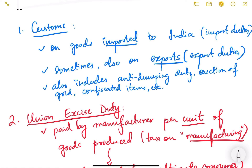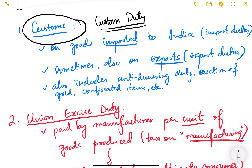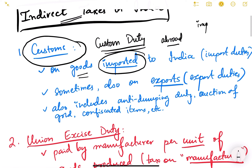The first indirect tax is the customs tax, also known as custom duty. It is basically on goods which are imported to India — goods which we buy from abroad. Import means to buy things from abroad, from different countries. So goods which are imported to India, on that we pay the custom duty. It is known as import duties.